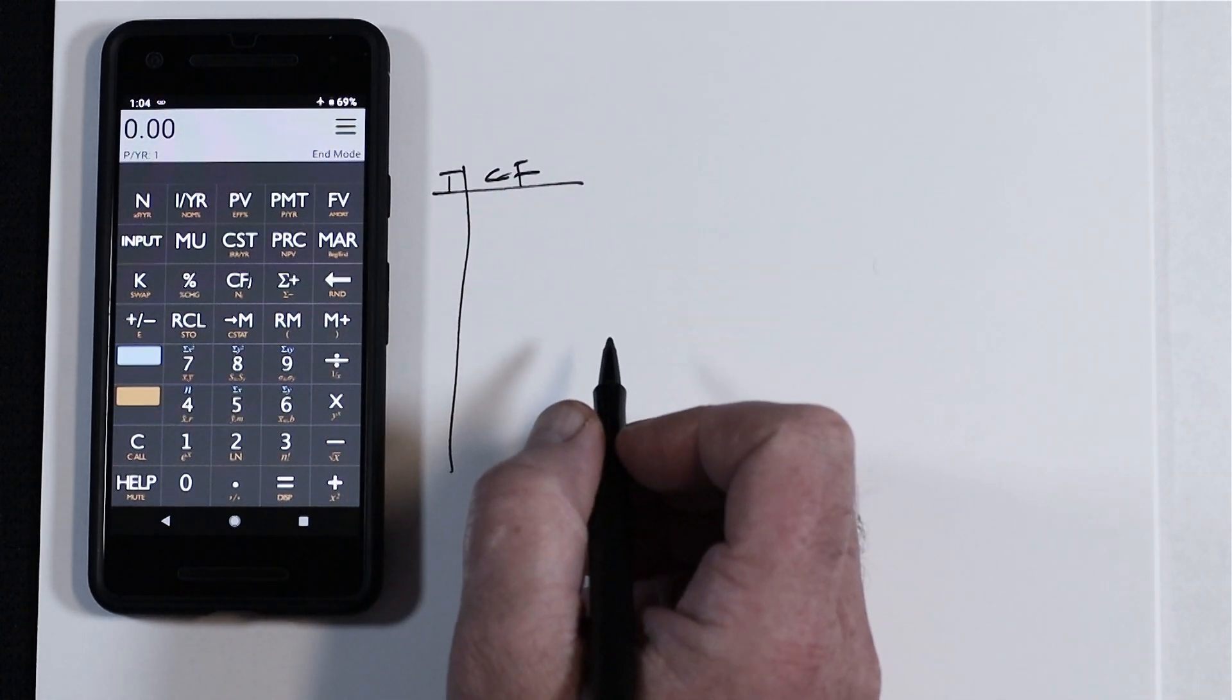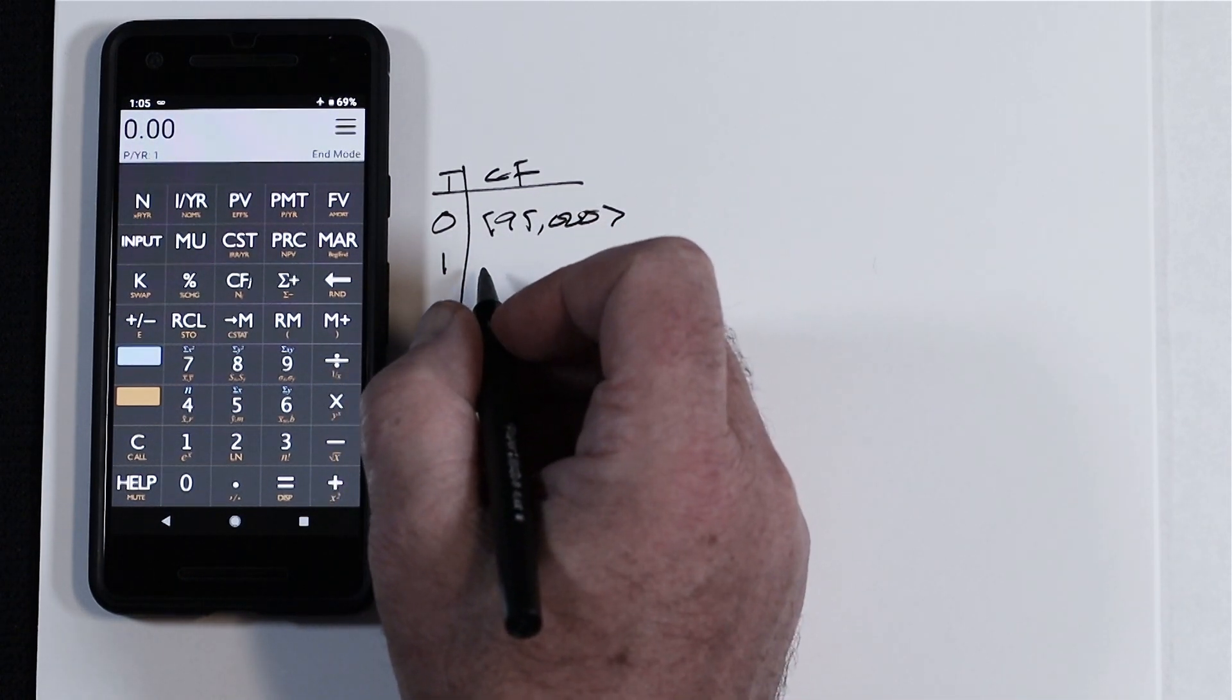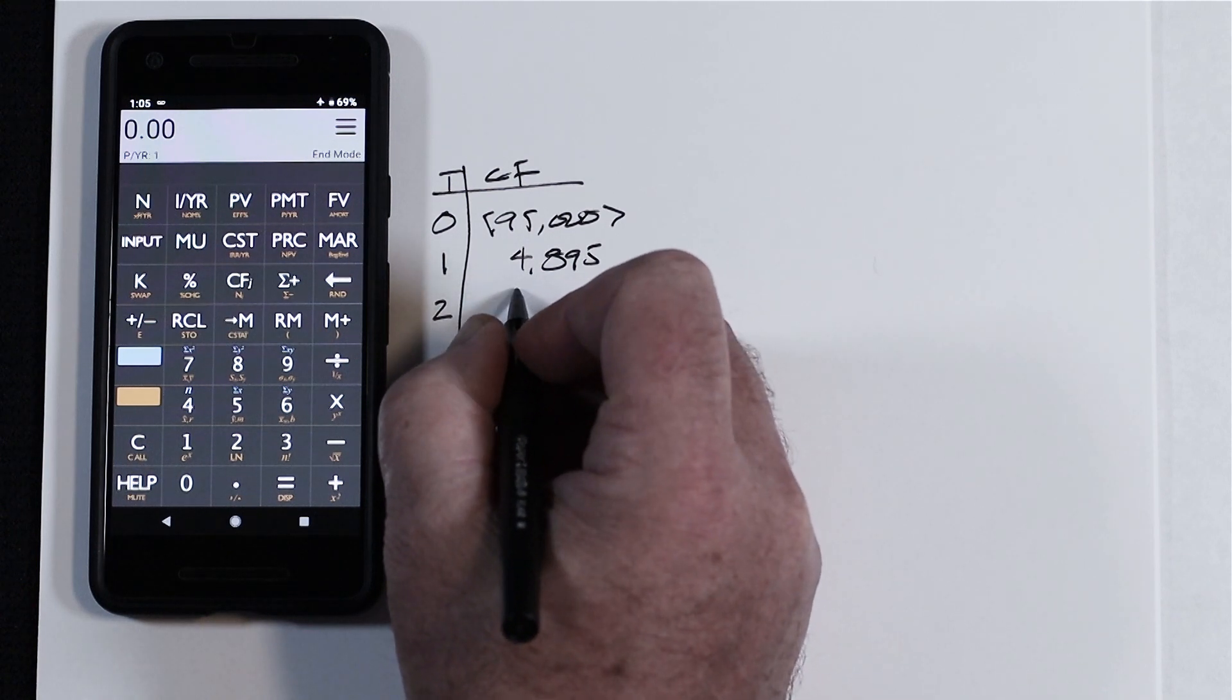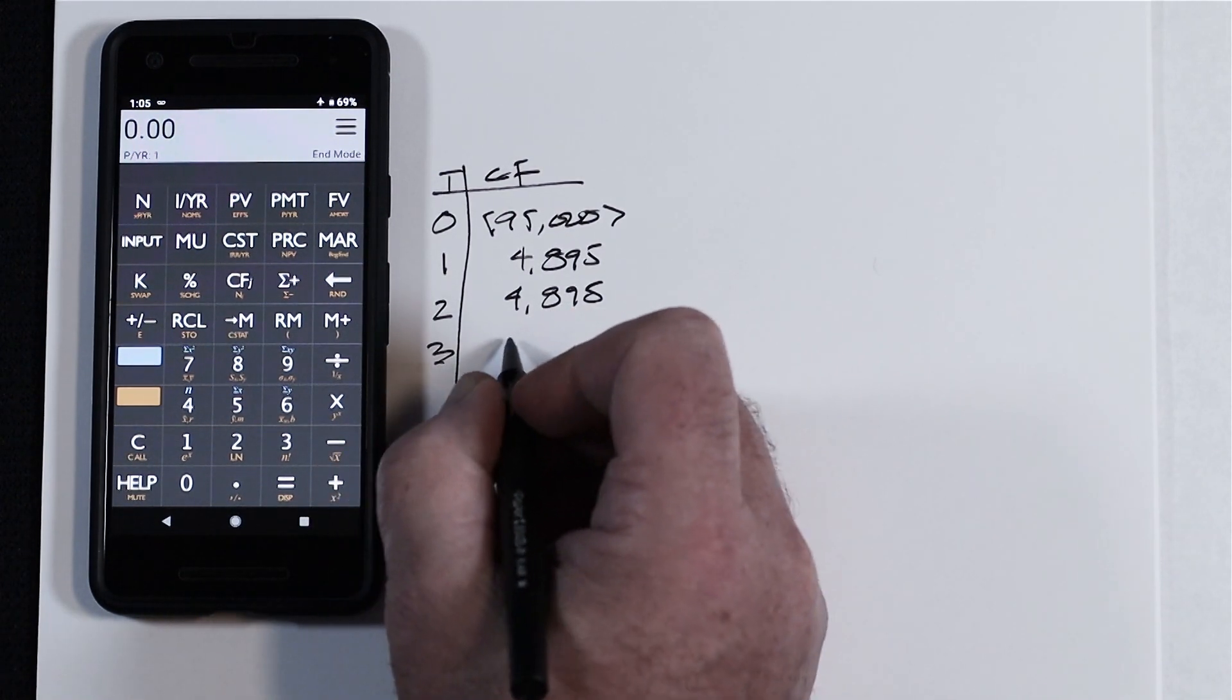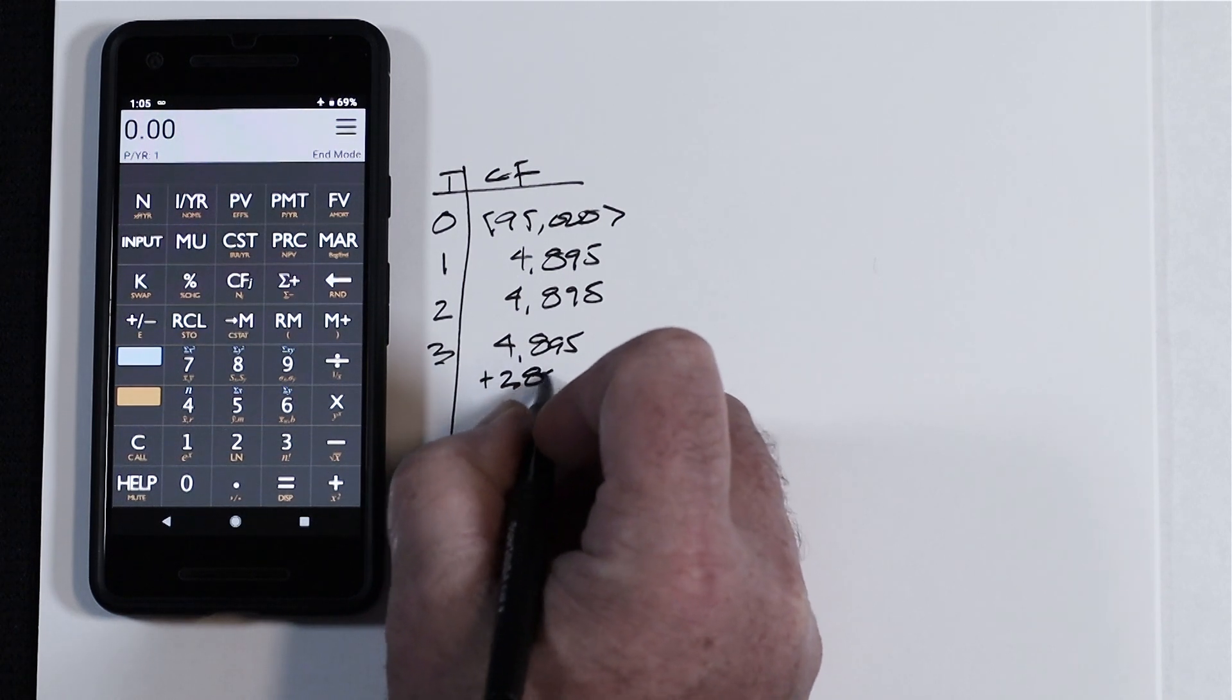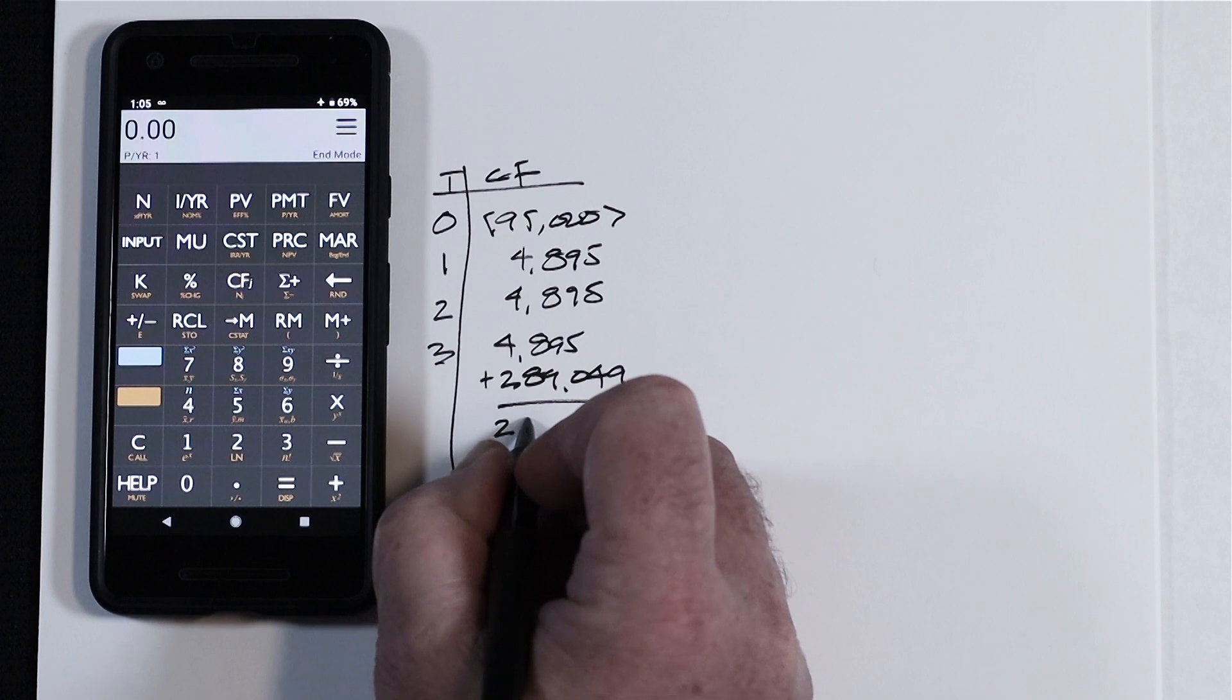So at time 0, you are paying out $95,000. Time 1, you're going to receive in $4,895. At time 2, also receive in $4,895. And at time 3, receive in $4,895 plus $289,049 for a sum received in that time period of $293,944.